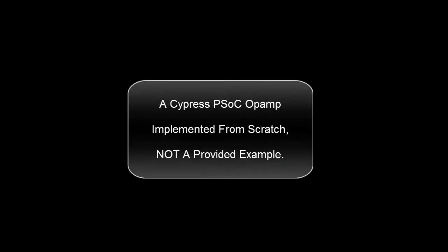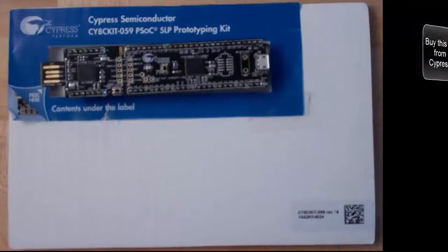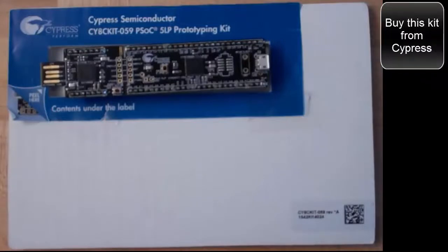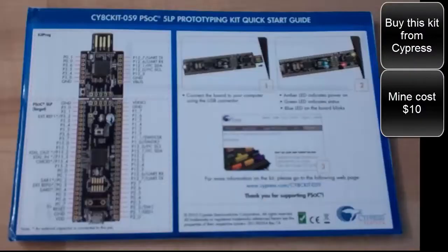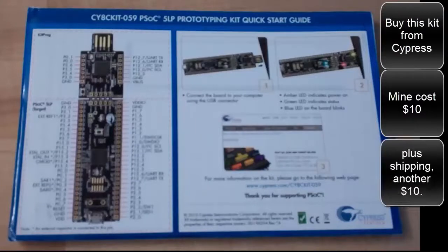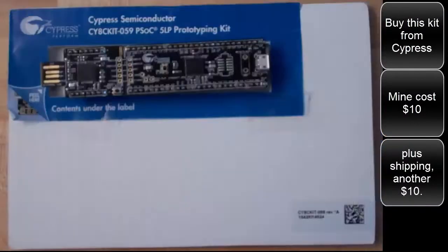A Cypress PSoC op-amp implemented from scratch. This is not a provided example. Buy this kit from Cypress — mine costs $10, plus shipping another $10.